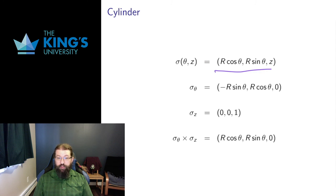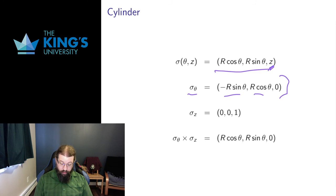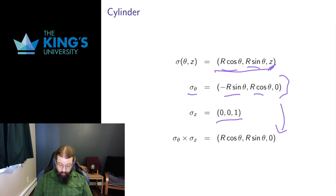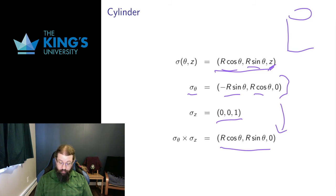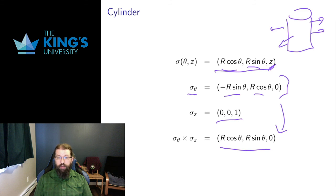Here's the parametric description of the cylinder. Taking the partial in theta: cosine becomes negative sine, sine becomes cosine, and there's no theta in z. Taking the partial in z: the first two components have no z, so I get 0, 0, 1. Taking the cross product gives something with circular symmetry and no z-component. That makes sense: if I have a cylinder around the z-axis, its normals should point outward with no z-component — they don't point up or down, they just point out.